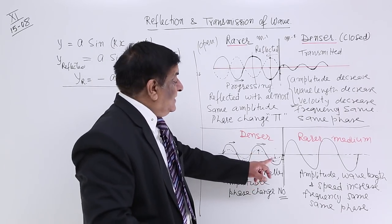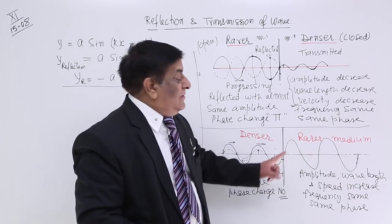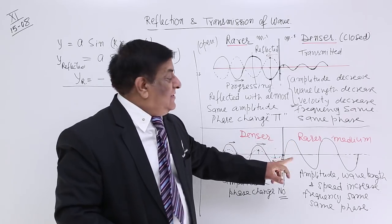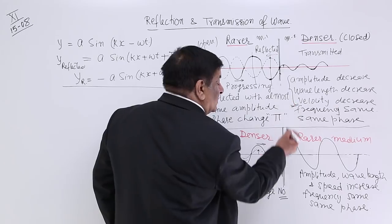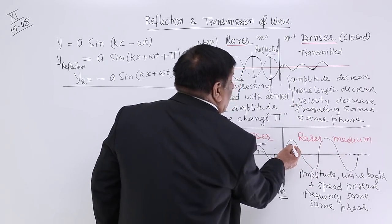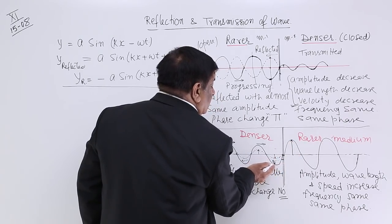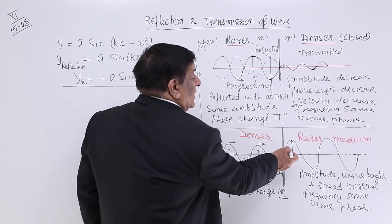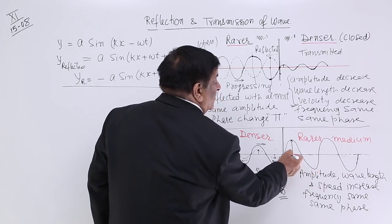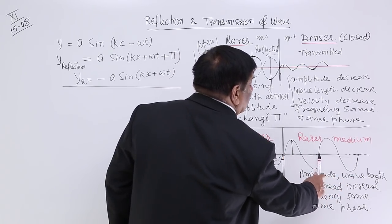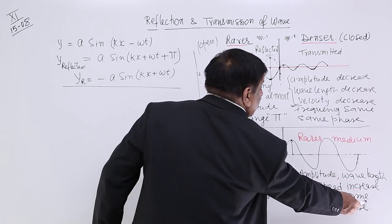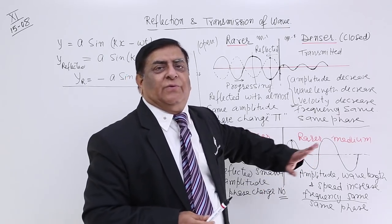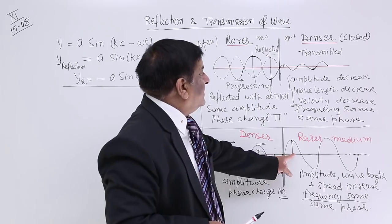Why less amplitude in reflection? Because when it hits the lighter medium, most of its energy is used to move the transmitted wave, so the transmitted wave actually has increased amplitude — a light particle can be moved further than 5 mm, maybe up to 8 mm. So for the transmitted wave, amplitude increases and wavelength also increases, meaning speed also increases. Frequency remains the same. For the reflected wave going back into the denser medium, there is no change of phase.